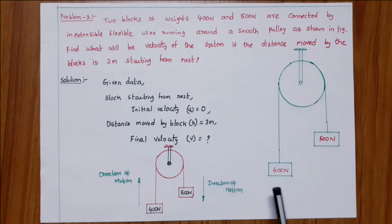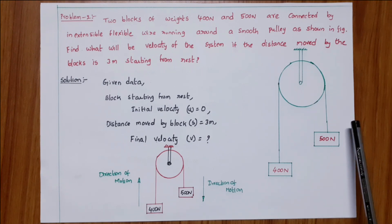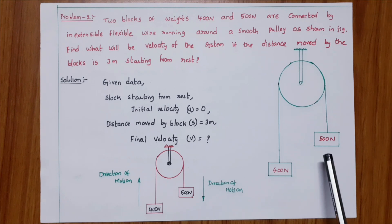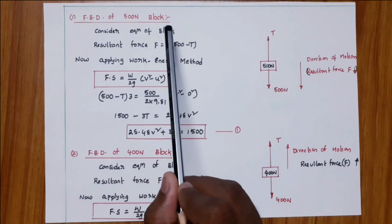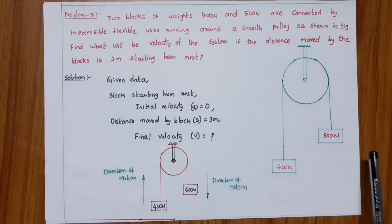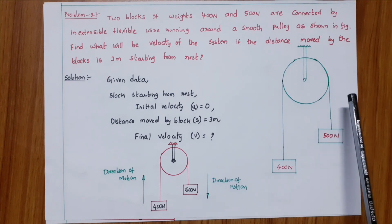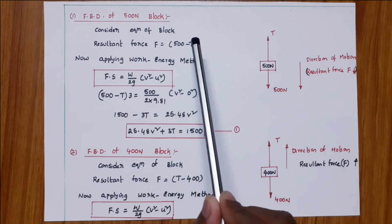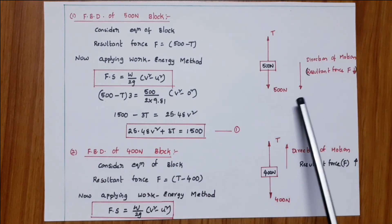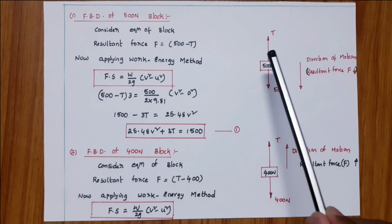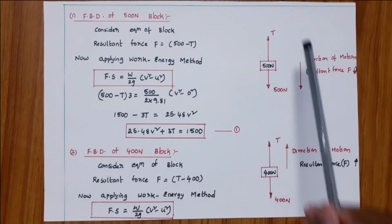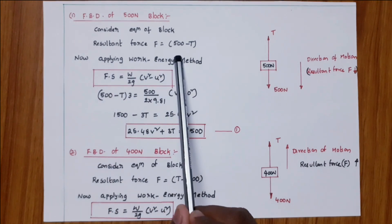Here the weight is 400 newton and here the weight is 500 newton. Since 500 is the greater value, the direction of motion is towards the 500 newton block — 500 newton block moving downwards, 400 newton block moving upwards. FBD of 500 newton block: weight acts downwards, tension T in the string acts upwards away from the block. Force in direction of motion is 500 newton (positive); T is opposite, so negative. Resultant force F equals 500 minus T.